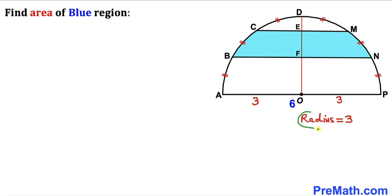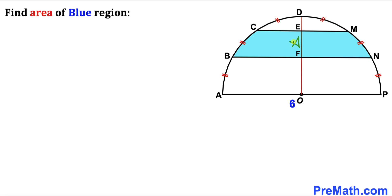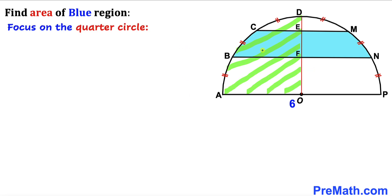The radius of this semicircle turns out to be three units. Since we are interested in calculating the area of the blue shaded region in the whole semicircle, to make our job simple let's focus only on the left-hand side quarter circle and calculate the area of that left-hand side blue shaded region first.